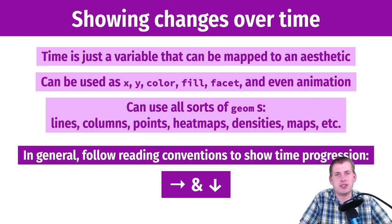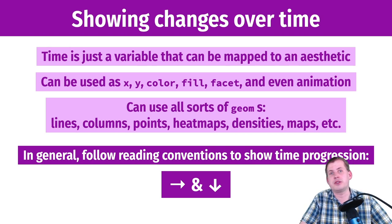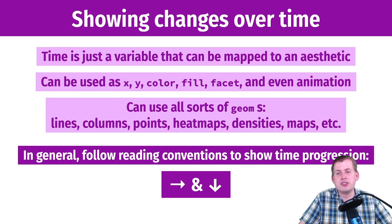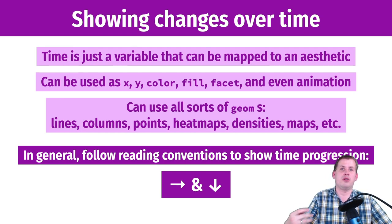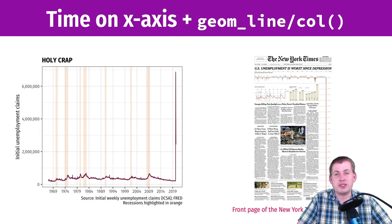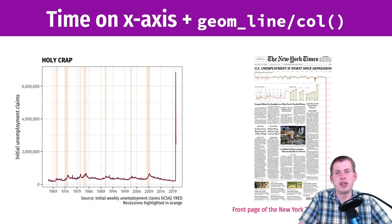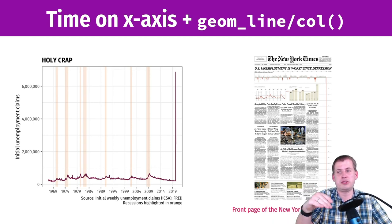If you're making a plot for an audience that reads Hebrew, Arabic, or another right-to-left language, have the progression of time go that way to match the reading direction. That's the main rule of thumb. Now we're going to look at some examples of different geoms and different aesthetic mappings for a time column. One of the most common ways is having time on the x-axis, because we read from left to right, and then having a line or columns show the actual values over time.